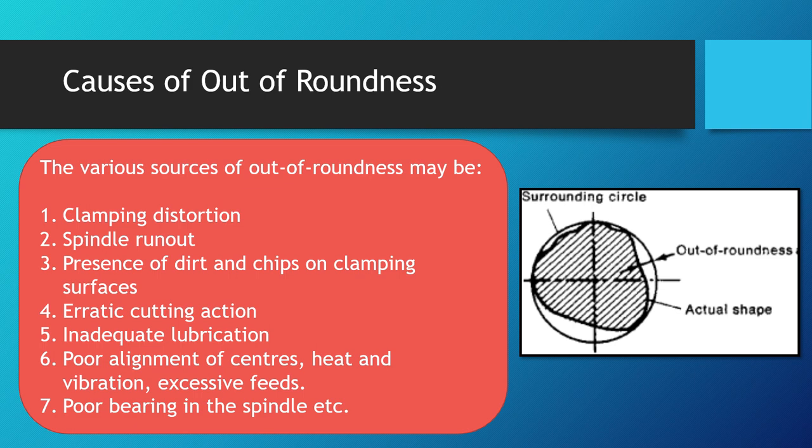The various sources of out-of-roundness may include clamping distortion, spindle run-out, presence of dirt and chips on clamping surfaces, erratic cutting action, inadequate lubrication, poor alignment of centers, heat and vibration, excessive feeds, poor bearing in the spindle, and many more.